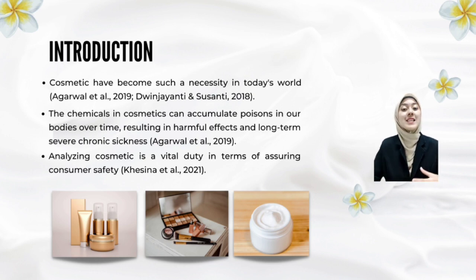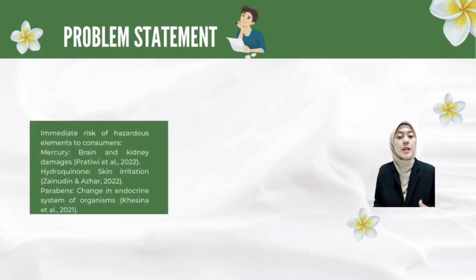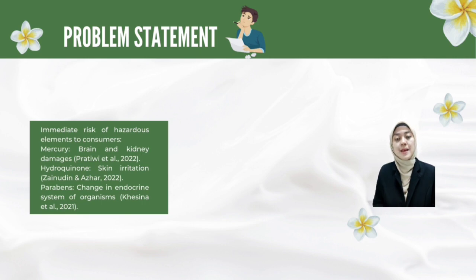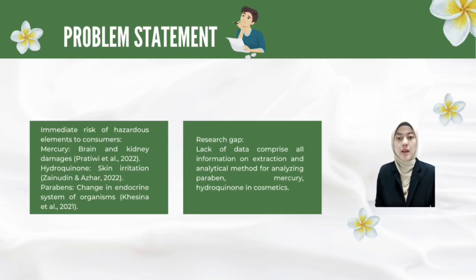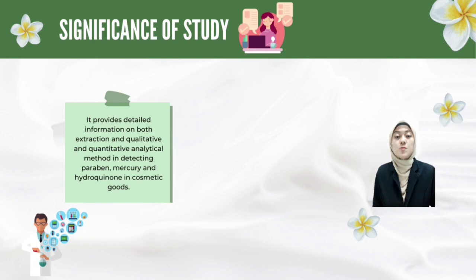Thus, analysing cosmetics is a vital duty in terms of assuring consumer safety, since the chemicals in cosmetics can accumulate poisons in our bodies over time, resulting in harmful effects and long-term severe chronic sickness. Mercury, hydroquinone and paraben are the elements chosen as the main samples in this review report, since they are commonly found in cosmetics and provide an immediate risk to consumers. However, the previous study's research gap is that there is a lack of data comprising all information on extraction techniques and both qualitative and quantitative analytical methods for analysing these three hazardous elements in cosmetics. The significance of this study is to provide detailed information on both extraction and analytical methods in determining paraben, mercury and hydroquinone in cosmetic goods.